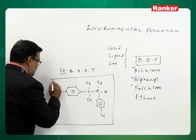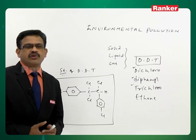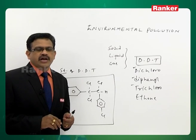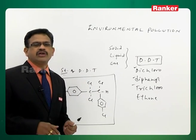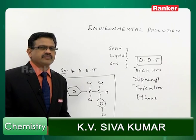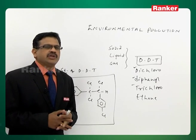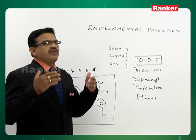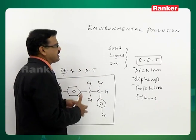Dichlorodiphenyl trichloroethane is a pollutant and a chlorinated compound. It stays in the atmosphere for a long period of time, and the chlorine present in DDT is not easily eliminated from the atmosphere, which is why it causes persistent pollution. Nowadays, different chlorinated compounds are used for the same purpose instead of DDT, helping to reduce this type of environmental pollution.